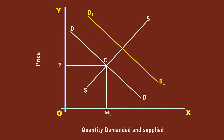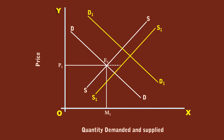The supply also increases due to the entry of a few new producers, and the supply curve also shifts to the right. The new supply curve is S1S1. The magnitude of increase in demand is greater than the increase in supply. The immediate effect is there arises an excess demand condition to the tune of E2 to E3. The sellers are willing to supply E2 units at price P1, but the consumers want to buy E3 units.